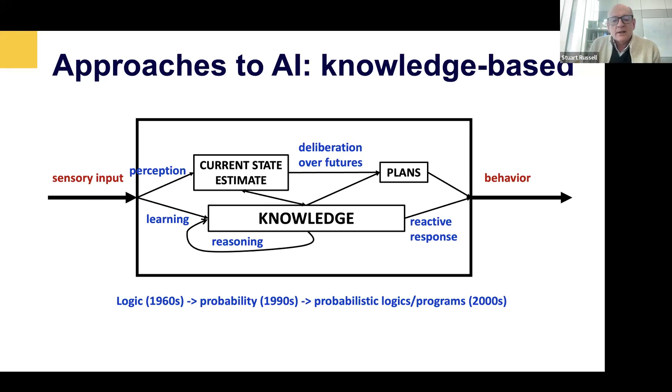So for most of the history of AI, between the 1950s and the 2010s, the dominant approach was the knowledge based approach. We thought that intelligent systems should know things, much as we believe that we humans know things and that knowledge allows us to function successfully in the world.